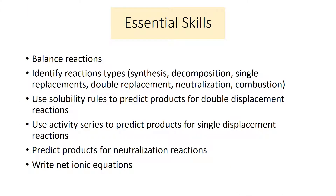The important things to learn from this chapter: Number one, balance reactions. Number two, identify reaction types — synthesis, decomposition, single replacement, double replacement, neutralization, and combustion (note: redox is not listed separately here). Use the solubility rules to predict products for double replacement reactions. Use the activity series to predict products for single replacement reactions. Predict products for neutralization reactions. And write net ionic equations.